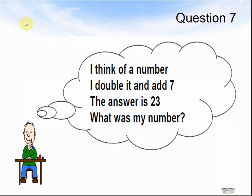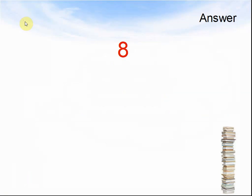Question 7. I think of a number. I double it and add 7. The answer is 23. What was my number? Pause the video and answer the question. The answer was 8.